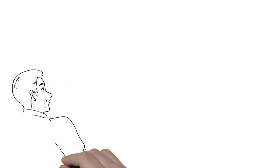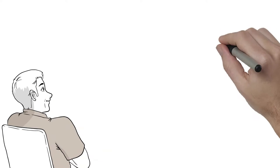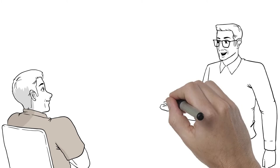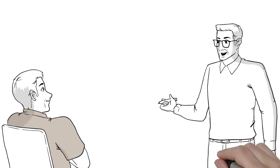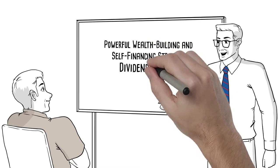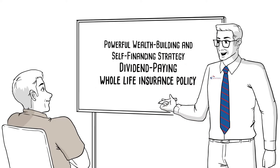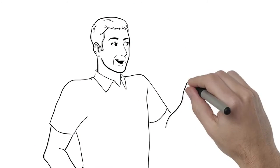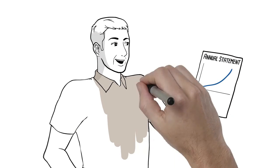So what's Kevin's secret? He's working with an advisor who specializes in a powerful financial strategy called Bank on Yourself. Kevin's advisor explained to him that a Bank on Yourself plan is a wealth-building and self-financing strategy that's based on a little-known type of dividend-paying whole-life insurance policy. These policies have features added to them that grow your money significantly faster than the policies most financial experts talk about.